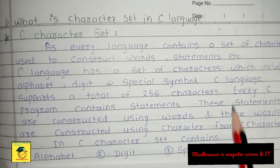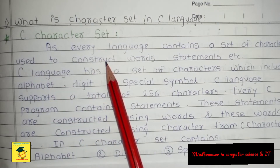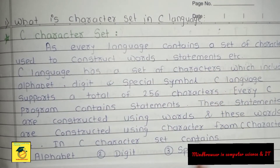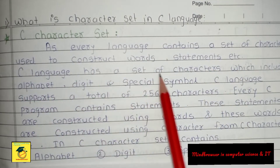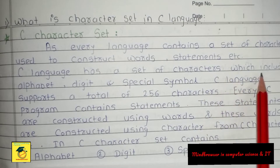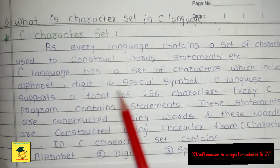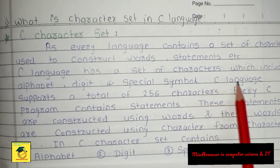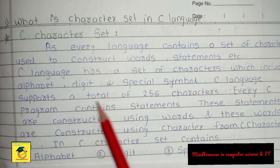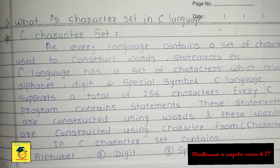As every language contains a set of characters used to construct words, statements, etc., C language has a set of characters which include alphabets, digits, and special symbols. C language supports a total of 256 characters.